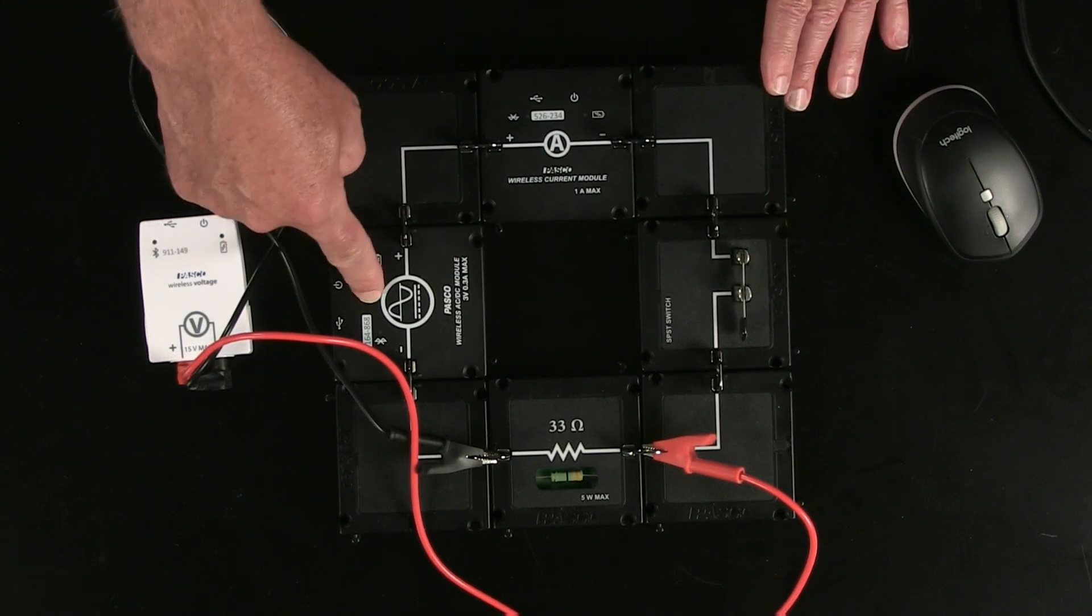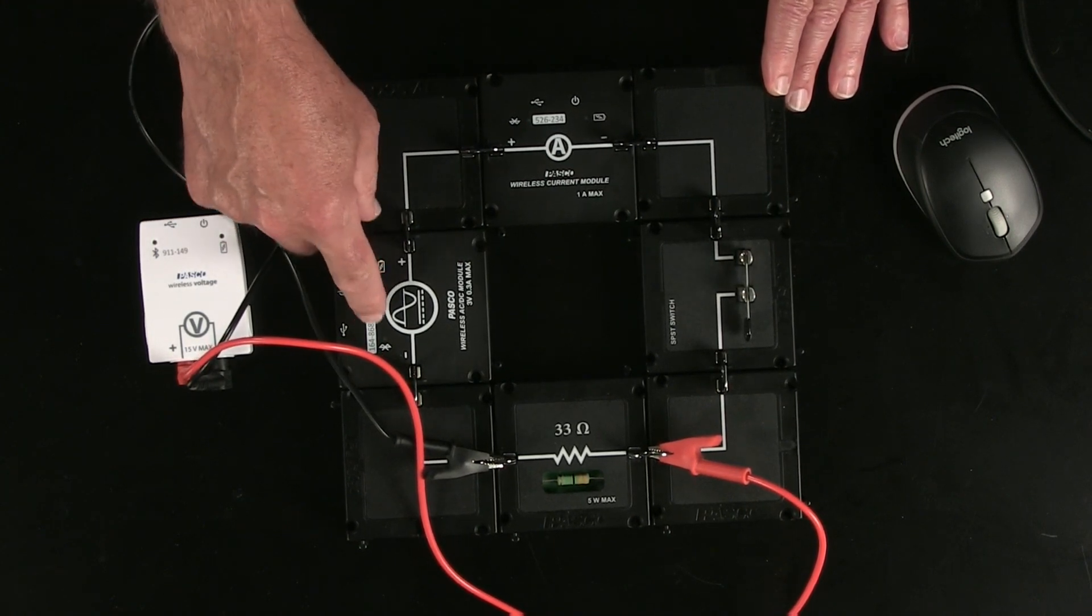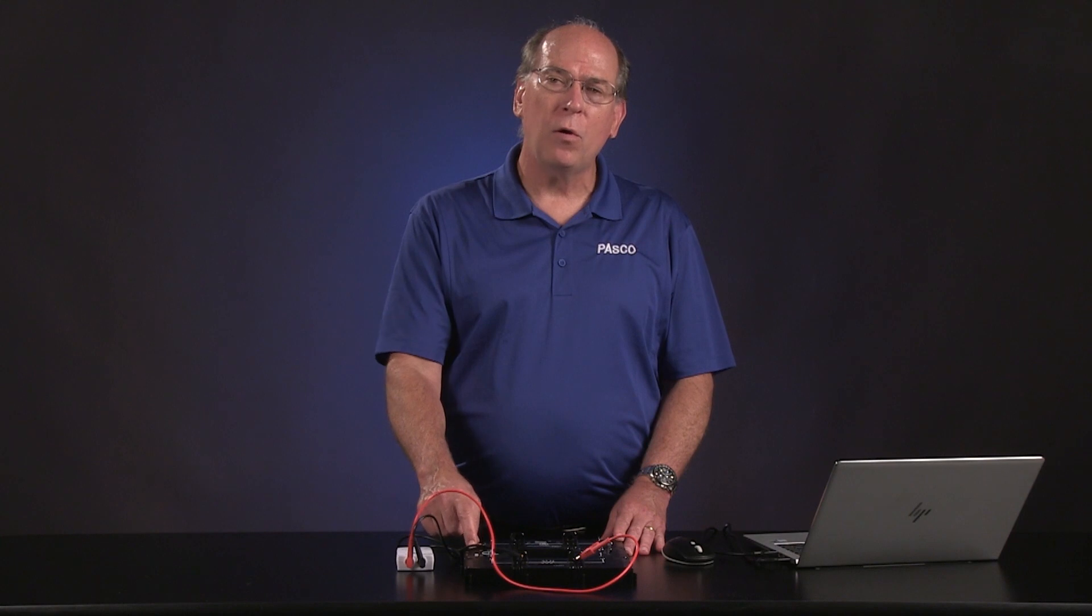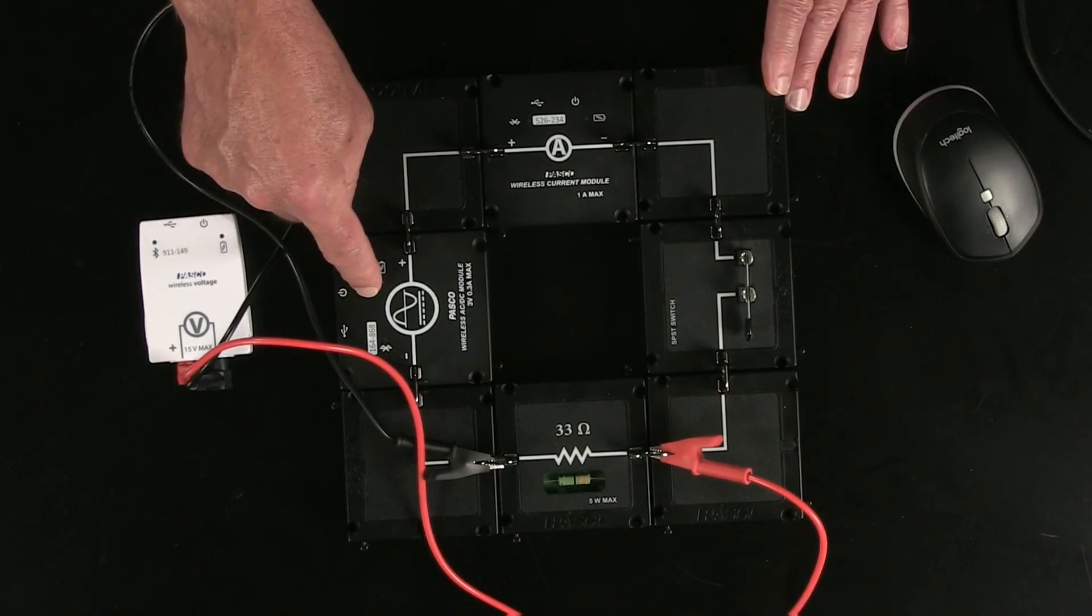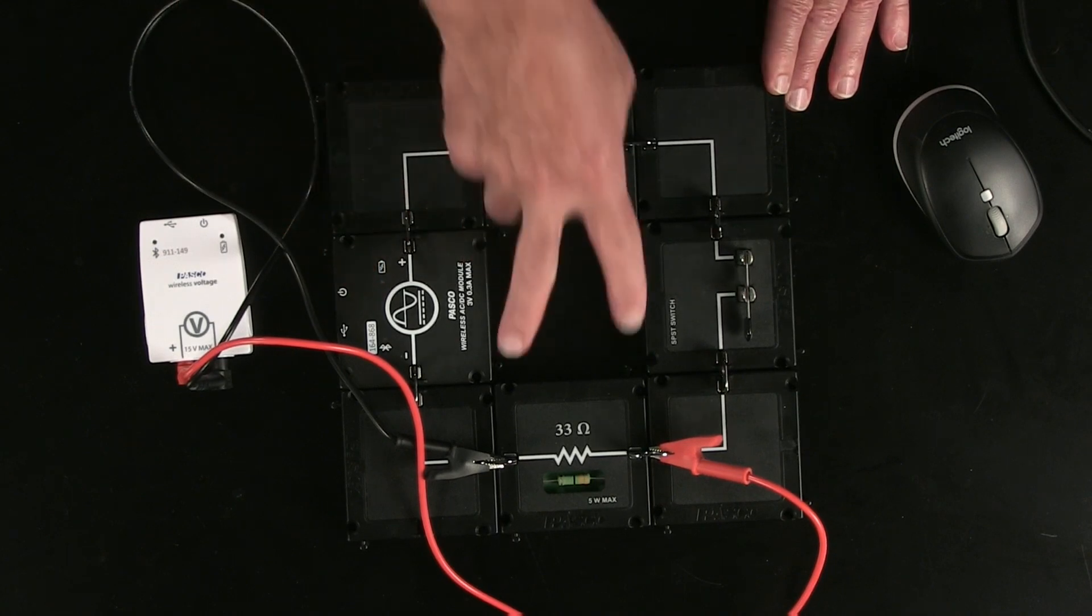And then this is our, instead of a battery, this is our power supply. It's called the wireless AC-DC module. And we're going to use it to change the voltage that we're applying across the resistor.